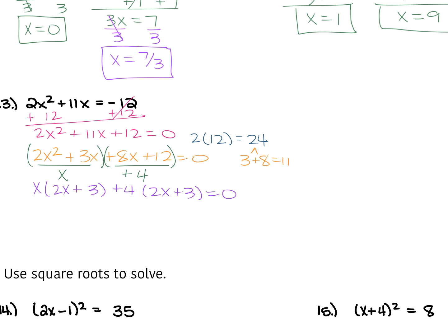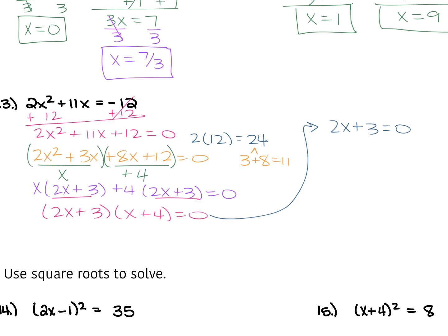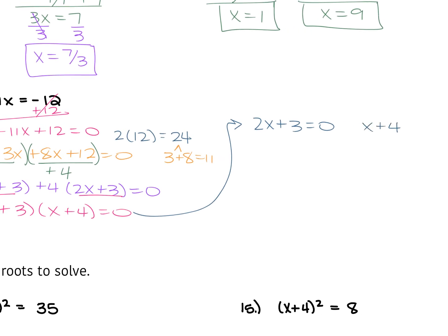You have four terms, so factor by grouping. From the first two terms, factor out an x; from the second two, factor out a positive 4. This gives you x times 2x plus 3 plus 4 times 2x plus 3 is equal to 0. Your two sets of parentheses are the same, so rewrite as 2x plus 3 times x plus 4 is equal to 0. You are completely factored, so set each equal to 0 and solve. For 2x plus 3 equals 0: subtract 3, then divide by 2 to get x equals negative 3 over 2. For x plus 4 equals 0: subtract 4 to get x equals negative 4.